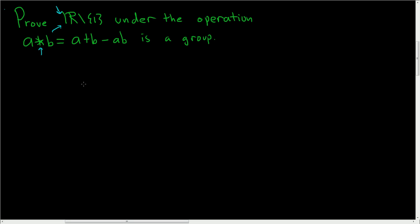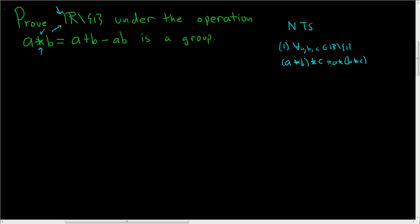So we have to show three things. We need to show, one, that the binary operation star is associative. So we have to show that for all a, b, c in our set, if we compute a star b and then star the result with c, that's the same thing as computing b star c and then starring the result with a. That's called associativity — that's the first thing we'll prove.